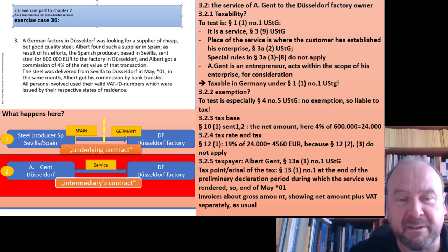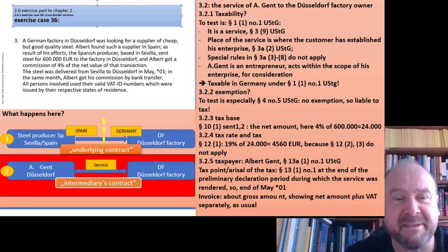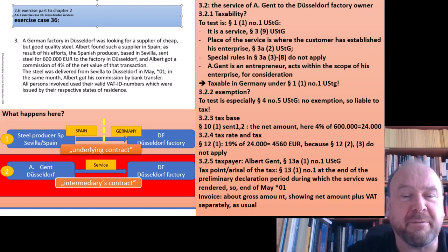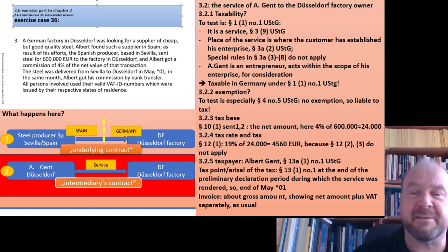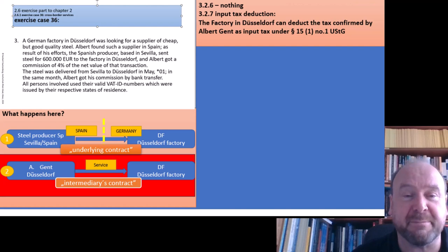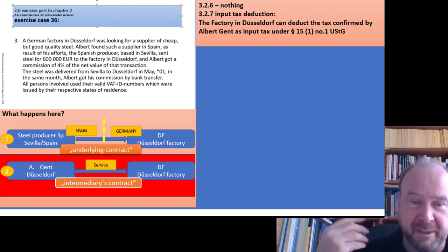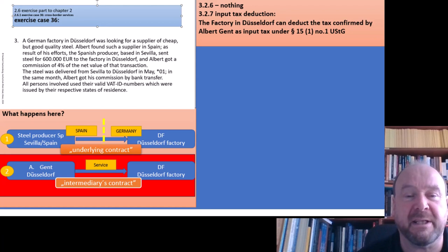The invoice must be regularly written: net amount plus VAT equals gross amount. That must show up on the invoice along with all formal elements — taxpayer identification number, name and address of Albert and the customer, and everything required for a compliant invoice. The factory in Düsseldorf can deduct the input tax confirmed by Albert on the invoice — the 4,560 euro under §15(1) No. 1 — because they received an invoice confirming the gross amount with VAT separately named, providing the necessary proof for input tax deduction.